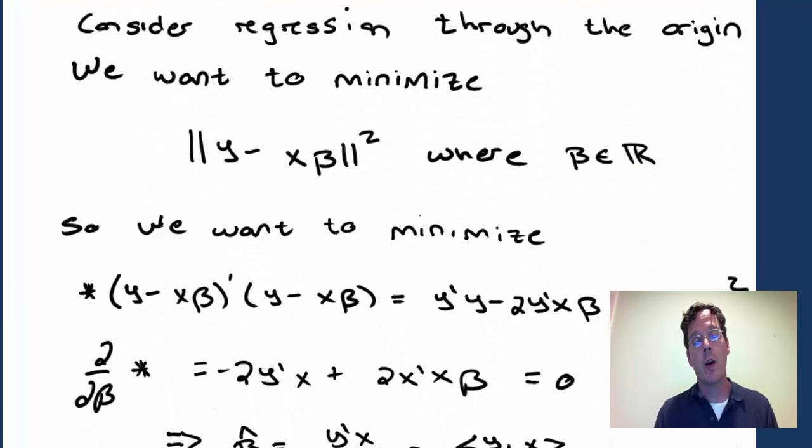We want to find the regression line that minimizes the distance between y and x beta where we look at the squared distance because it makes it a little bit easier. This is basically minimizing the sum of the squared vertical distances between the observed y points and the fitted points on a line through the origin.